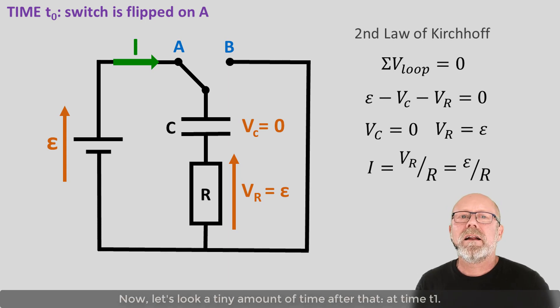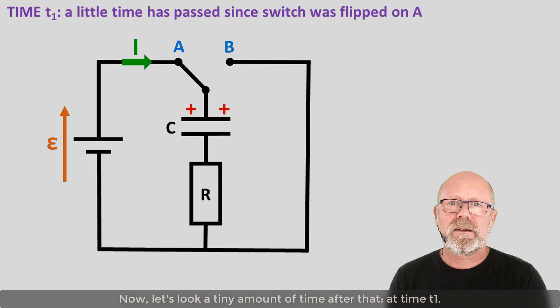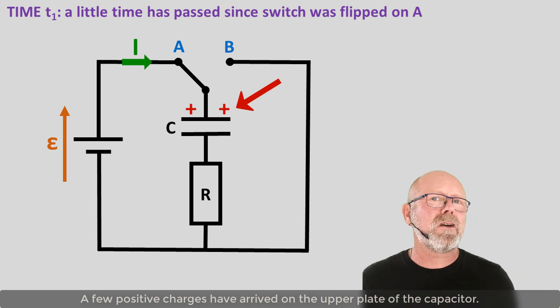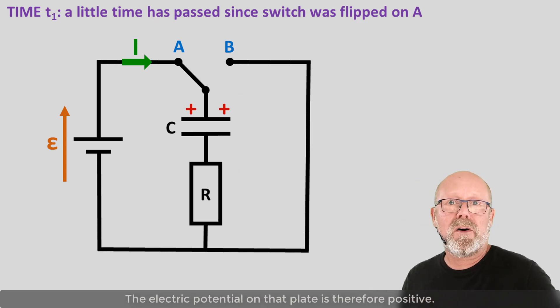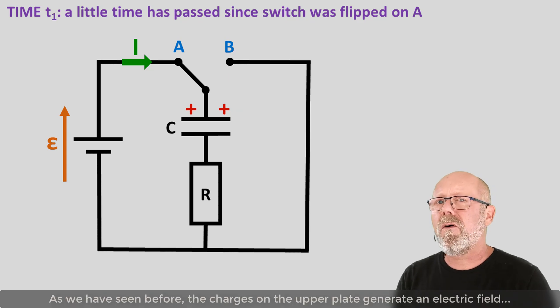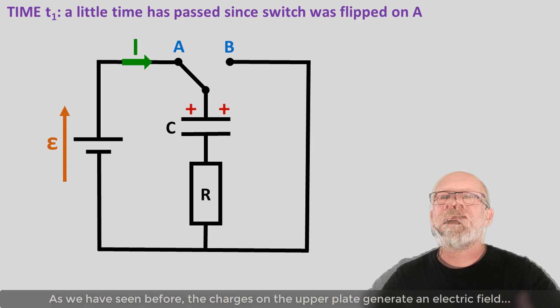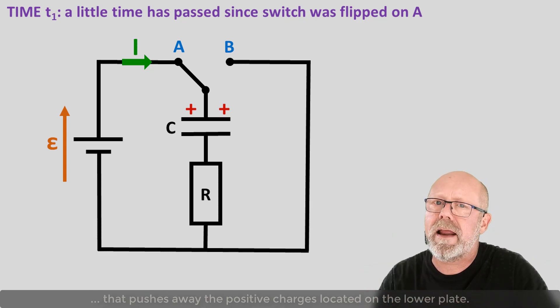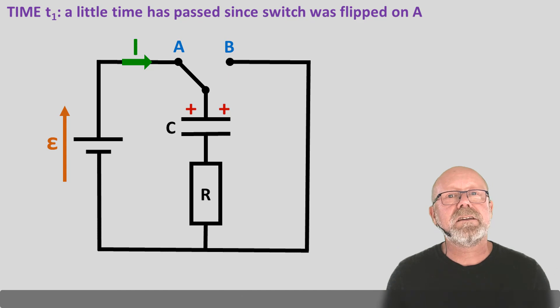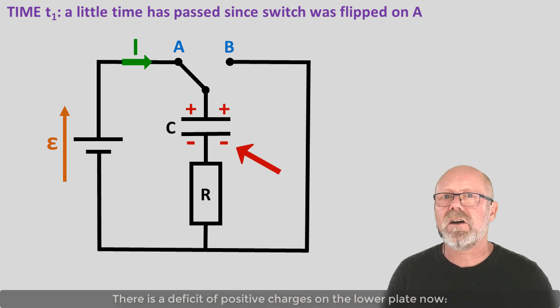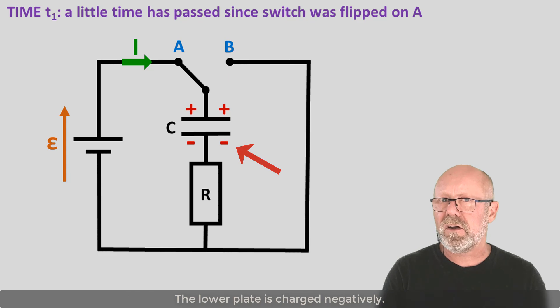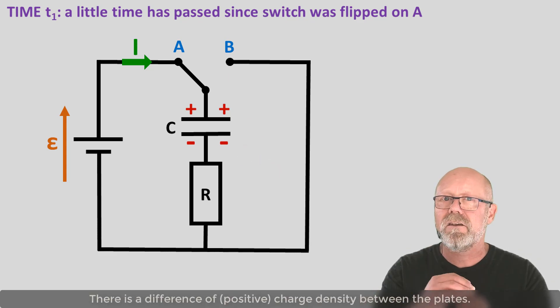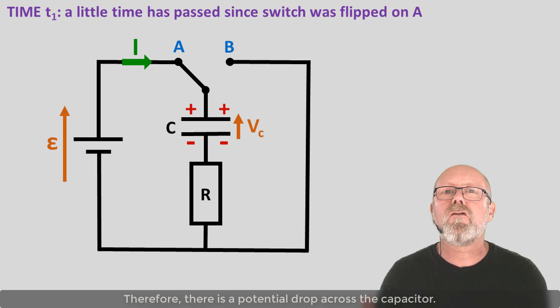Now, let's look at a tiny amount of time after that, at time t1. A few positive charges have arrived on the upper plate of the capacitor. The potential on that plate is therefore positive. As we have seen before, the charges on the upper plate generate an electric field that pushes away the positive charges located on the lower plate. Consequently, there is a deficit of positive charges on the lower plate now. The lower plate is charged negatively. And there is a difference of charge density between the plates. Therefore, there is a potential drop across the capacitor.